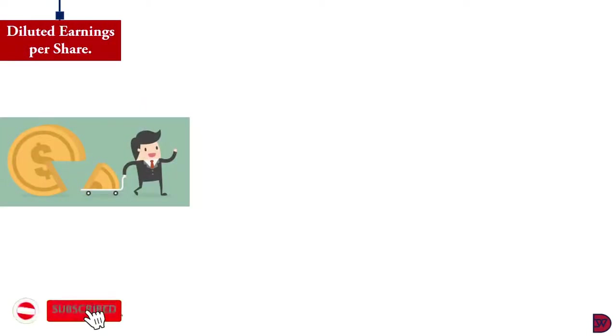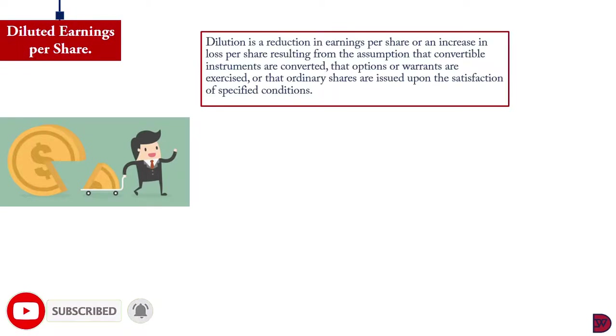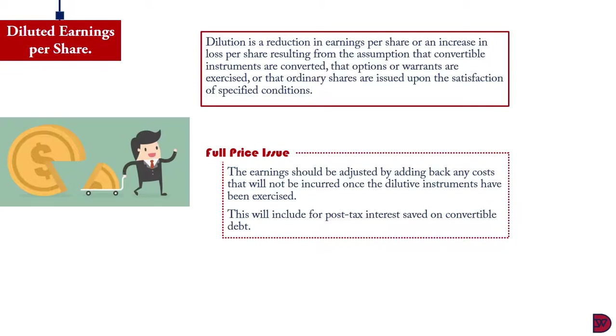Now that we are done with the basic earnings per share, let's move to the diluted earnings per share. When we say a share is diluted, it means that the earnings per share has been reduced or the loss per share has been increased with assumption that potential ordinary shares have been exercised, meaning convertible instruments have been converted, options or warrants have been exercised or that ordinary shares are issued upon the satisfaction of specified conditions. When we say a share is diluted, it means that there have been an introduction of more shares, which has rendered the existing shareholders lose the proportion of their ownership in the business. For full price issue, the earnings should be adjusted by adding back any cost that will not be incurred once the dilutive instrument has been exercised. This will include the post-tax interest saved on convertible debts.